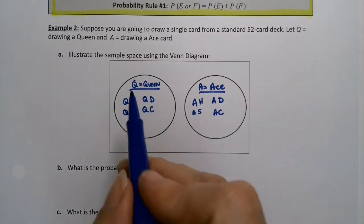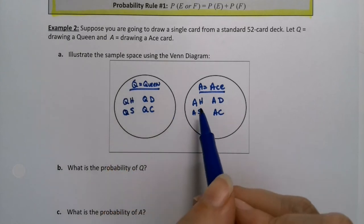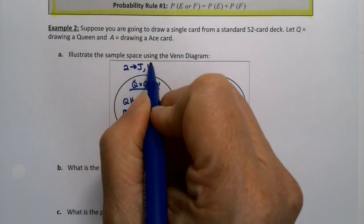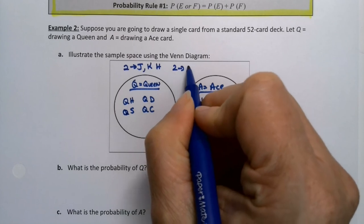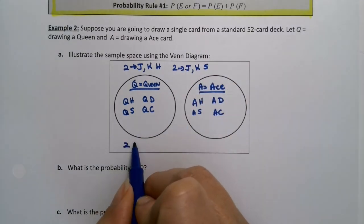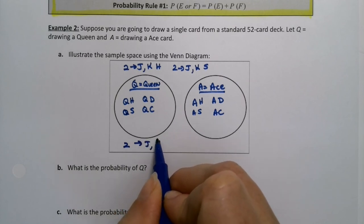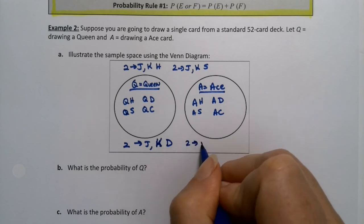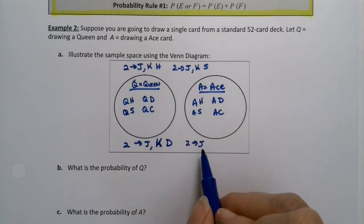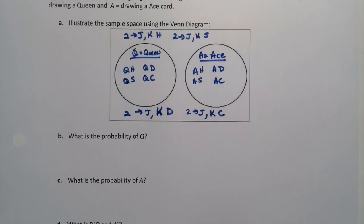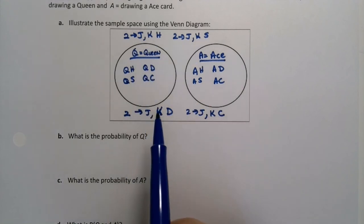Now the sample space is everything, so you do have to write out in the box all the other things. So we want two through jack and the king. So we want two through jack and king of hearts, two through jack and the king of spades. I'm running out of space up there. I'll put it down here. Two through jack and the king of diamonds. And two through jack, so two, three, four, five, six, seven, eight, nine, ten, jack. All right, so we have all those other cards out there. There's 52 cards total.